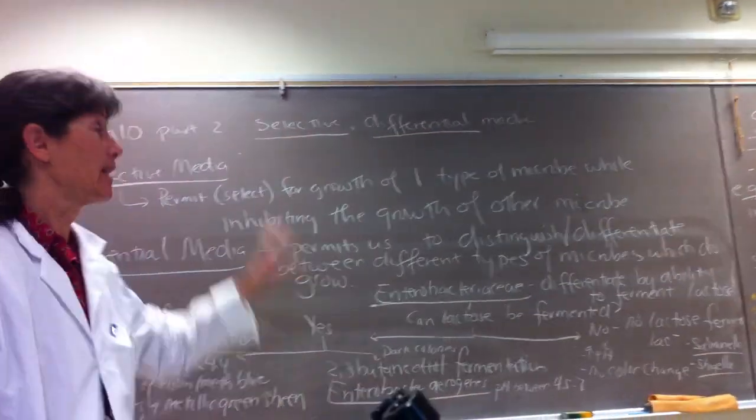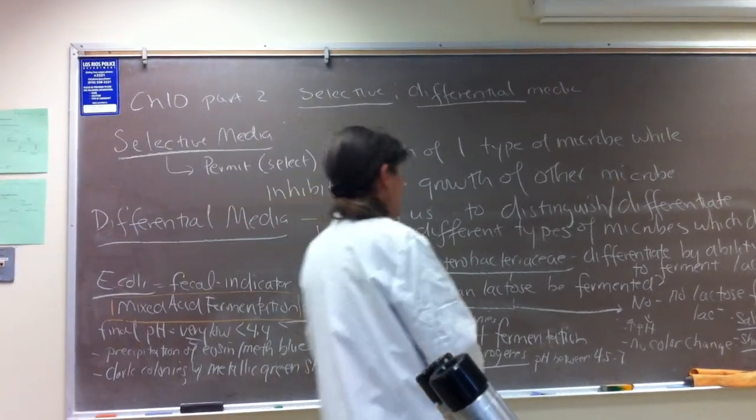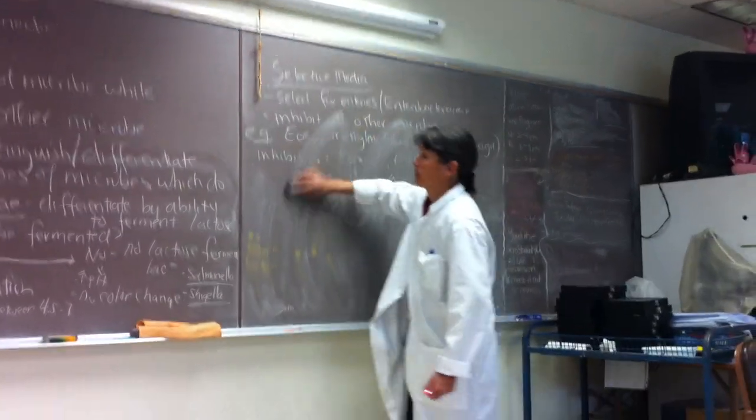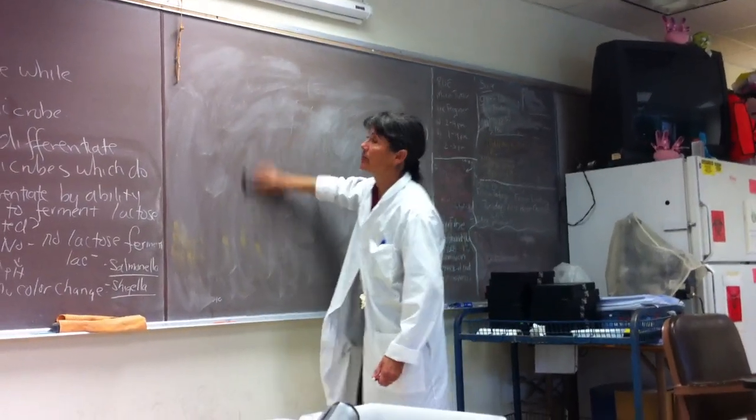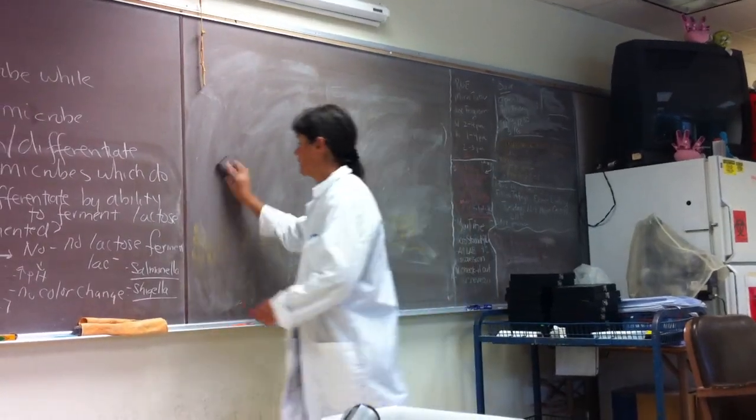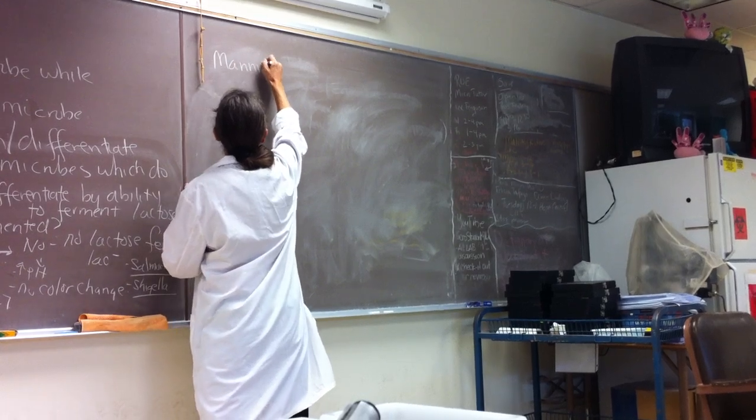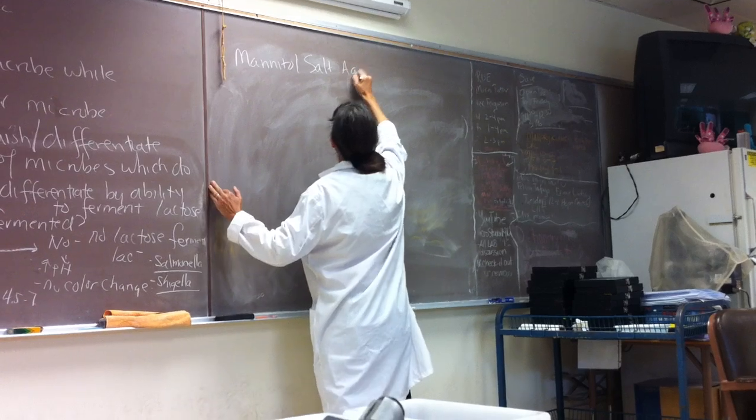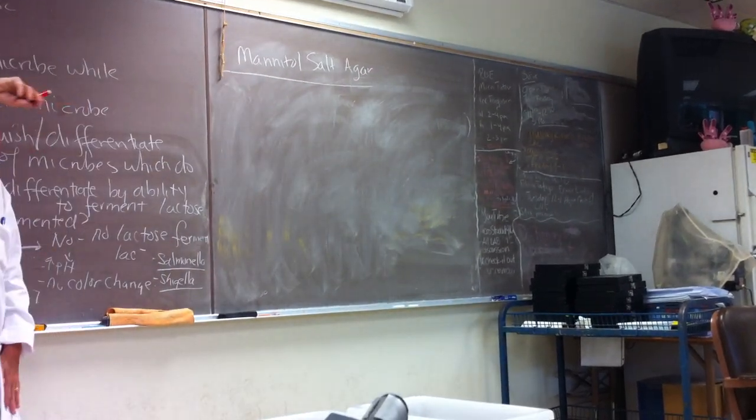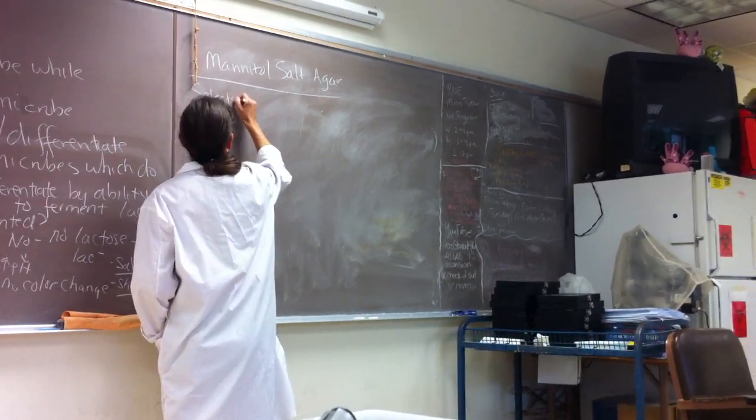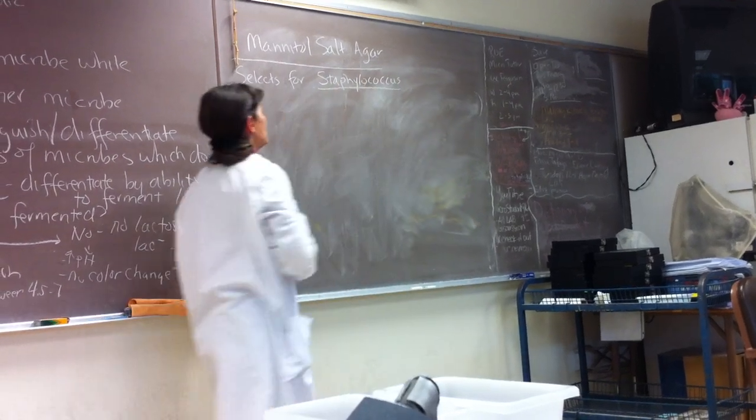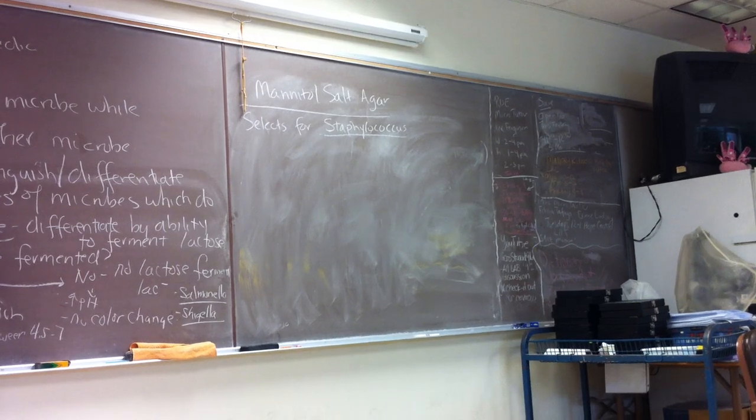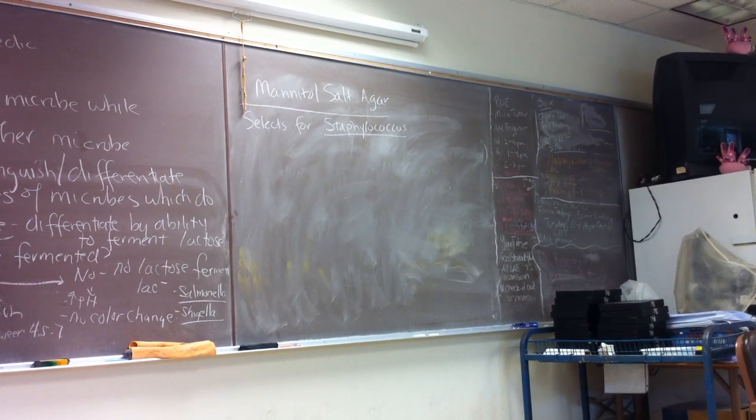So let's take a look at mannitol salt agar, MSA agar. It's the fourth medium in Table 2. And this is, thank heavens, not as complicated. That was the hardest one talking about eosin-methylene blue. So mannitol salt is not going to be so hard. Let's see if you can figure it out. MSA agar is used to select for the growth of the genus Staphylococcus.